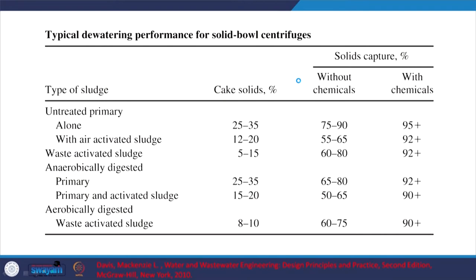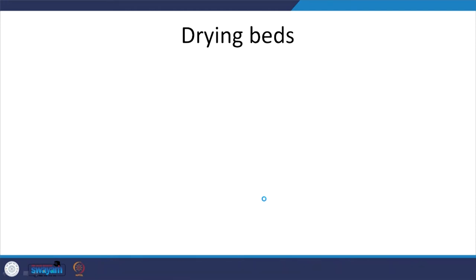Comparing dewatering options: for belt filter press, the loading rate is lower but energy requirement is also lower. For centrifuge, more energy is required, but it does not need to run continuously since capacities are typically higher — though noise can be an issue. Regarding cake solids, anaerobically digested sludge generally yields a relatively better solids concentration than aerobically digested waste activated sludge — always keep this in mind when choosing stabilization type.